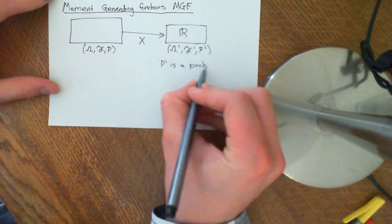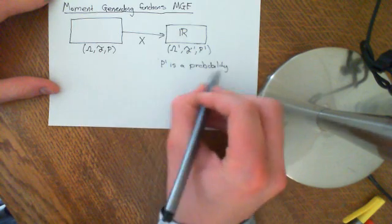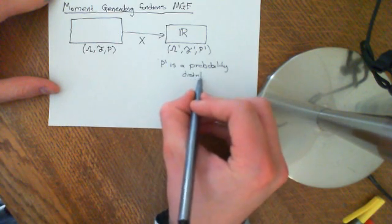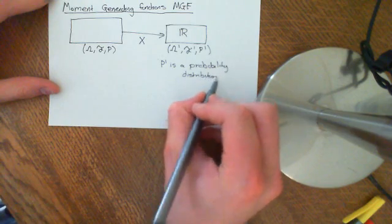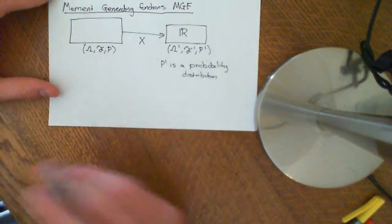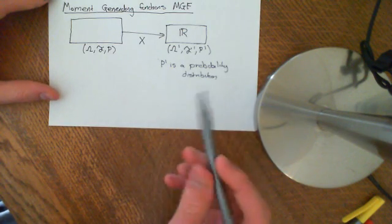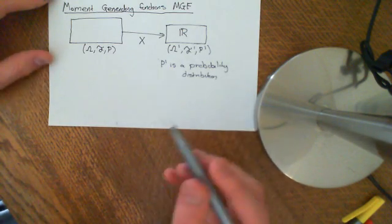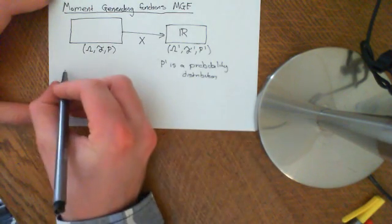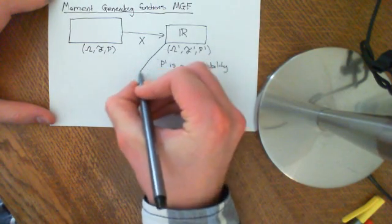We know there are lots of ways of representing all the information needed to derive the probability distribution: the PMF in the case of discrete random variables, the CDF for both discrete and continuous random variables, the PDF (probability density function) for continuous random variables, and now another one — the moment generating function.